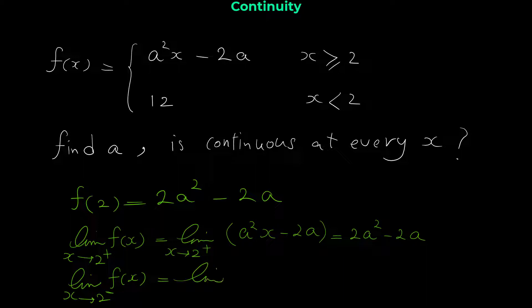For the left limit, as x approaches 2 from the left, x is less than 2, so we use the other equation where f(x) = 12, a constant function. There is no x to plug in, so the left limit is simply 12.